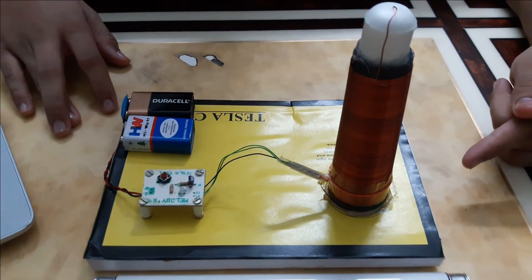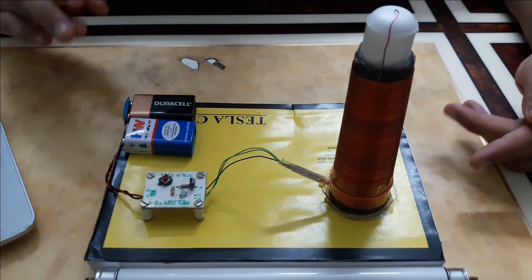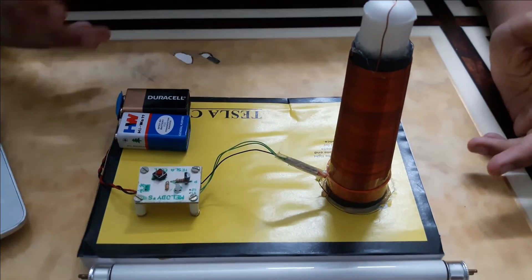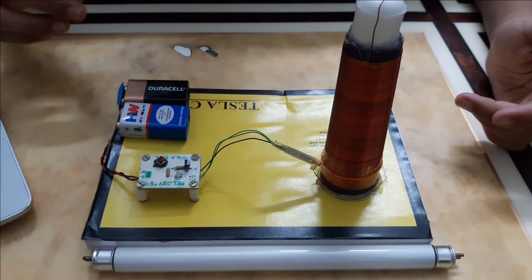Since the number of turns in the secondary coil is very much larger than the primary coil, this voltage will be very high voltage, and hence this coil will have a very strong electric flux around it.